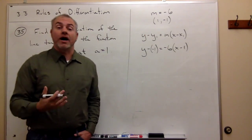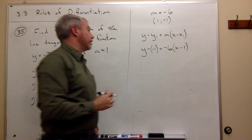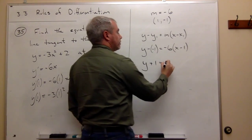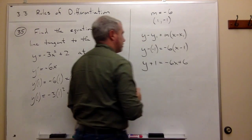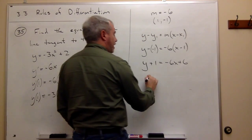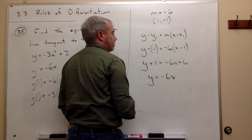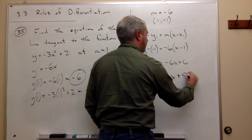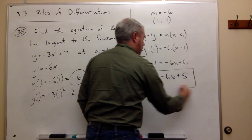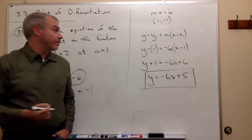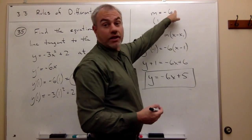Now I can solve for y. I've got y plus 1 equals negative 6x plus 6. Subtract 1 from both sides, and I get y equals negative 6x plus 5. That gives me the equation of the tangent line.